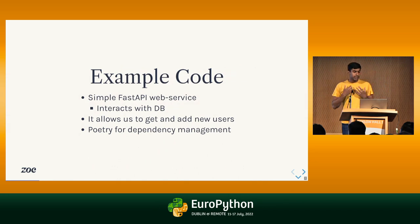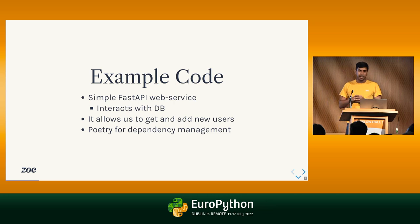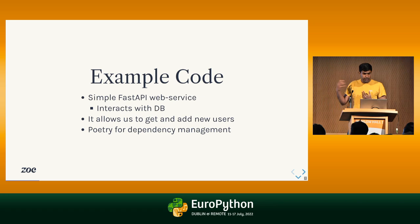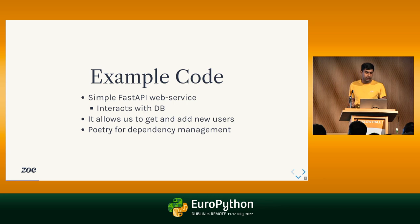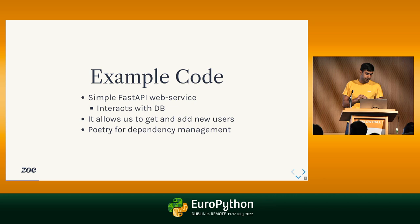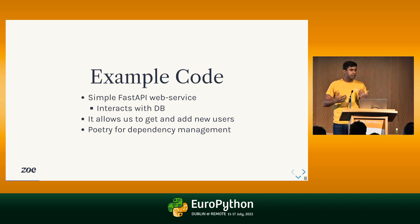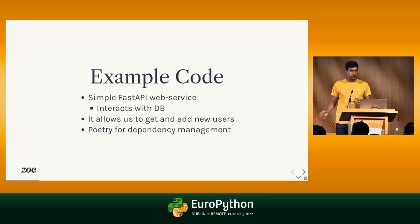What are we going to do? We're going to take an example web service — in this case, a FastAPI web service, which is an asynchronous Python web framework, very similar to Flask. It's going to interact with a database and get and add new users. Just imagine it as your standard CRUD service. We're going to use Poetry for dependency management, which adds nice things like locking our dependencies.